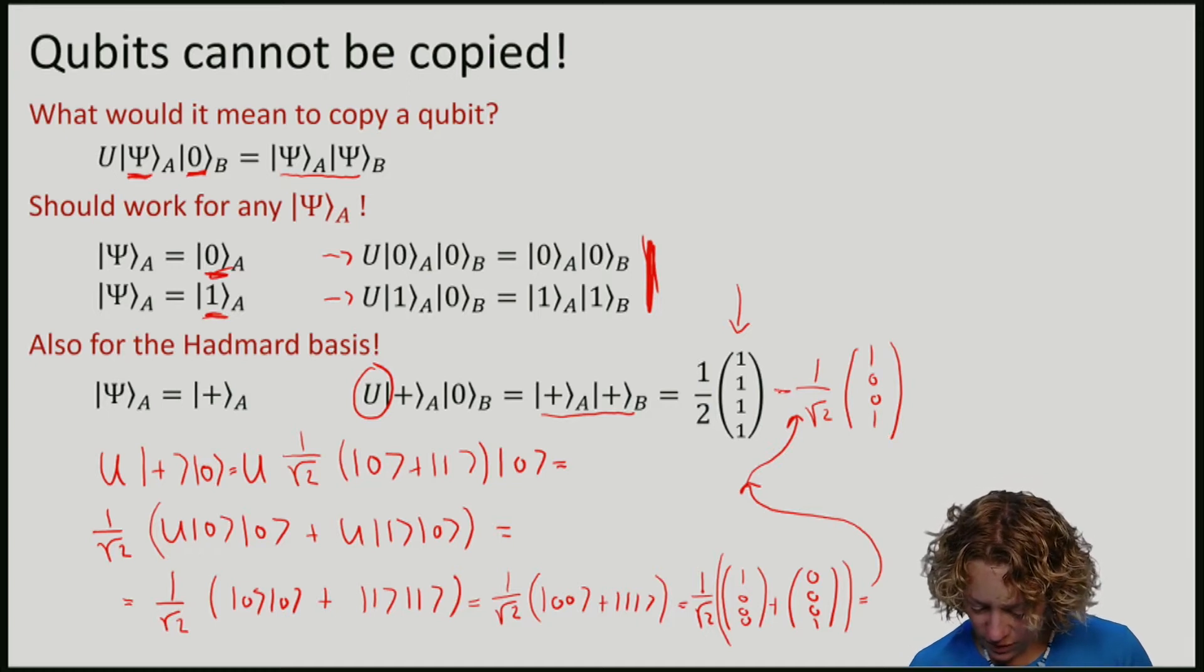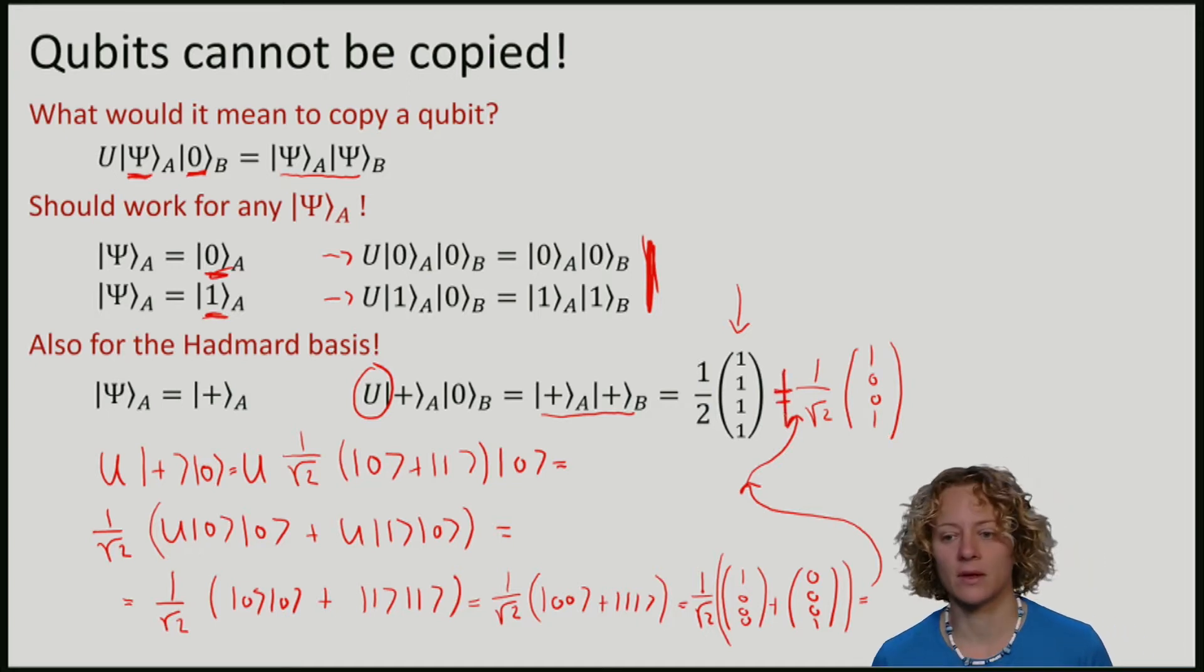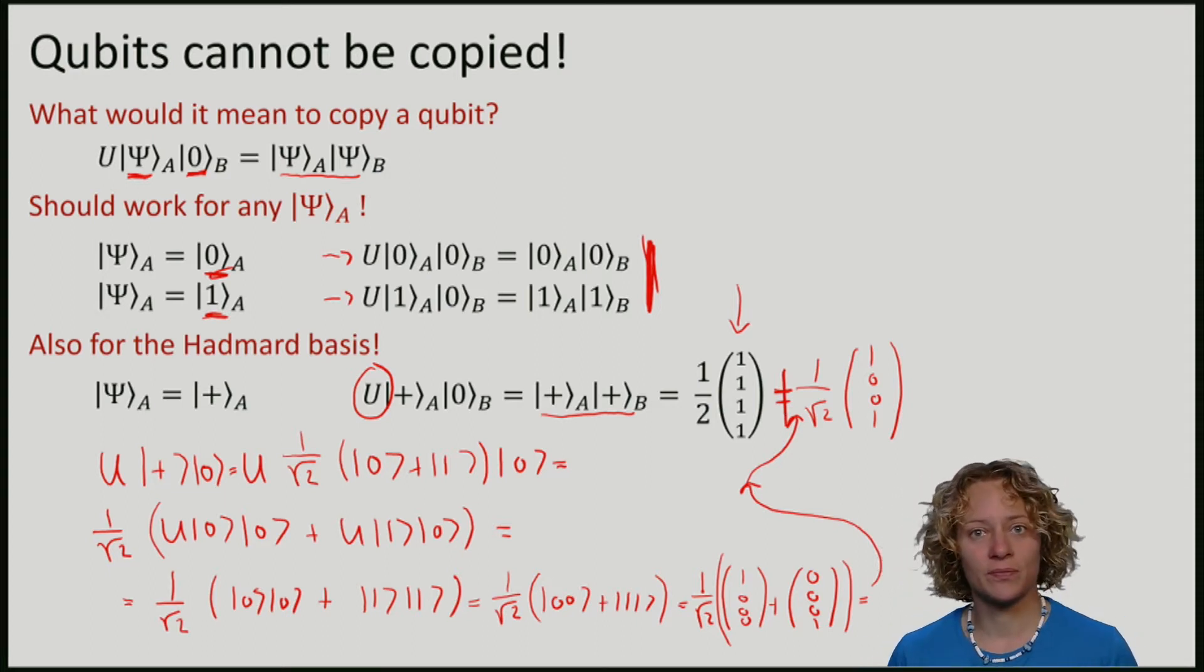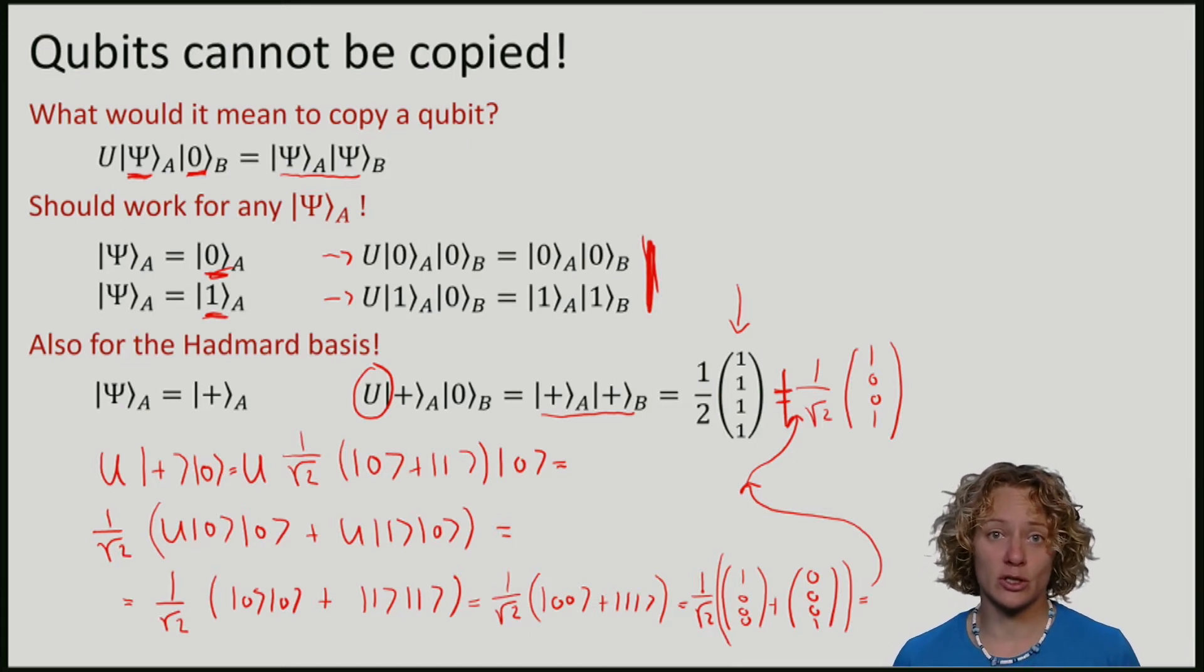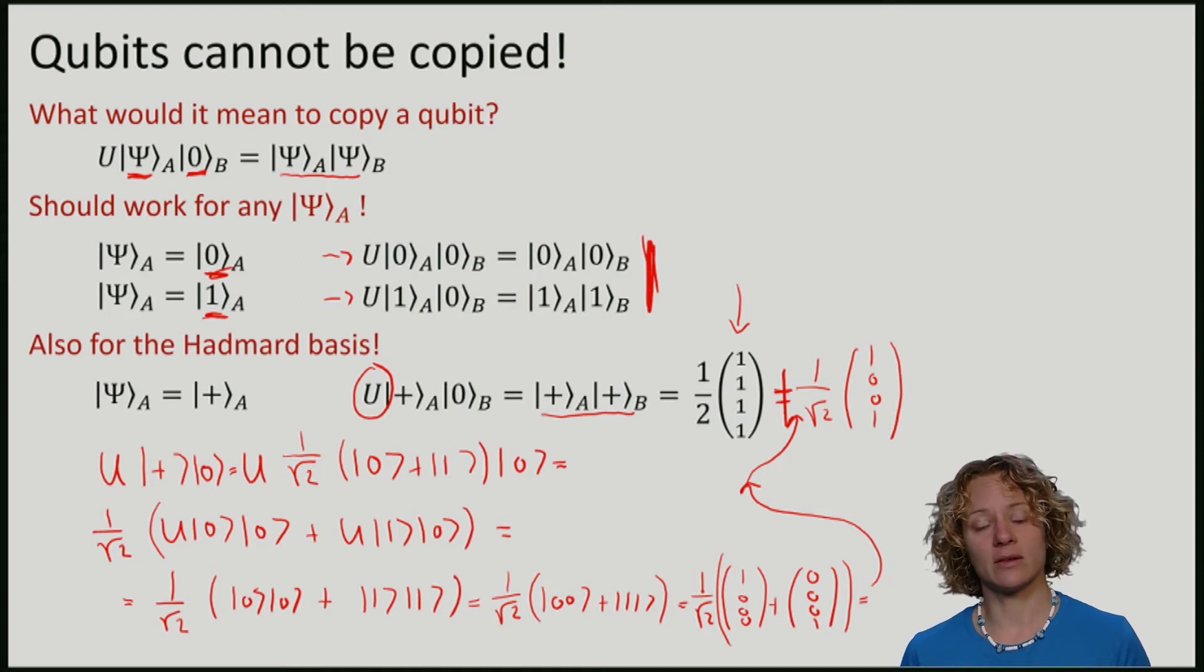So there is a contradiction. Not both things can be true at the same time. This means that there cannot be a copy operation U that copies all three of these states: |0⟩, |1⟩, and |+⟩. So we've seen a contradiction and we see that there cannot be any unitary that can copy qubits. This is a fundamental difference between classical and quantum information that is quite important for quantum cryptography.